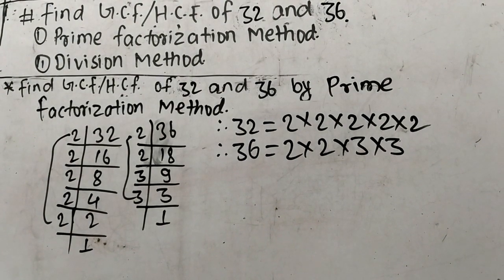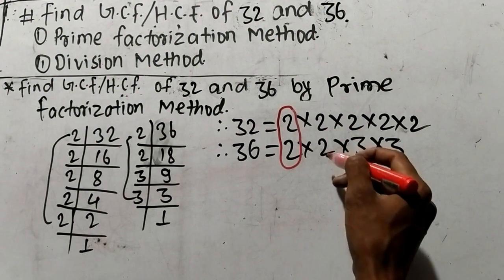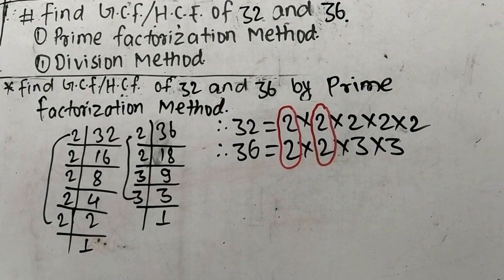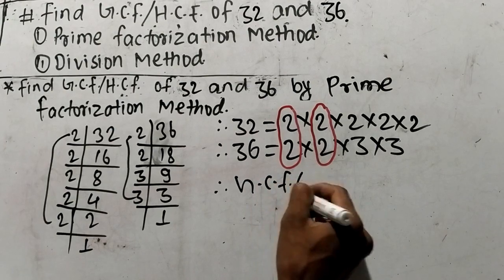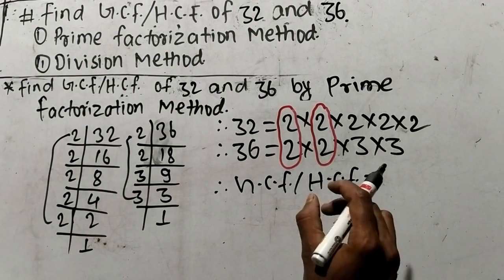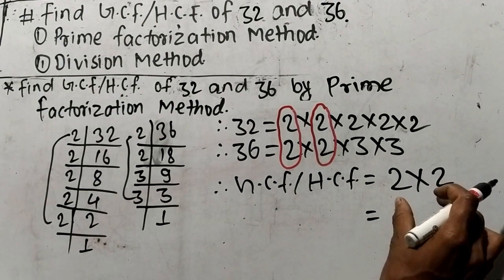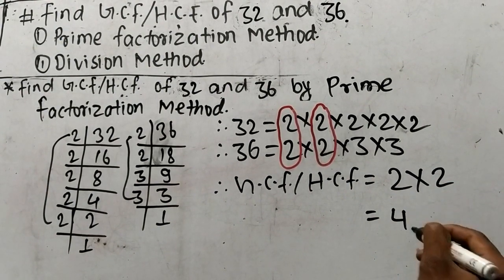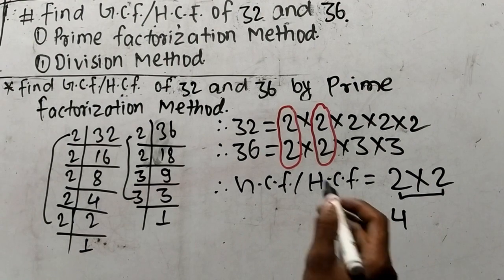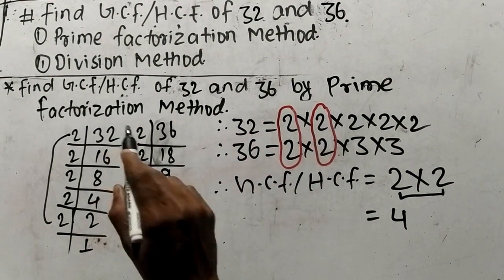Now we find out the common factors in these prime factors. Here there is 2 and here is also 2, so 2 is the first common factor. Like as here is 2 and here is also 2, so 2 is also a common factor. Here is 2 and here is 3, which are non-common factors. GCF or HCF is the product of all common factors only. So the common factors are 2 and 2, and the product is 2 times 2 equals 4. Therefore 4 is the GCF or HCF of 32 and 36. In this way we can find out GCF or HCF by prime factorization method.